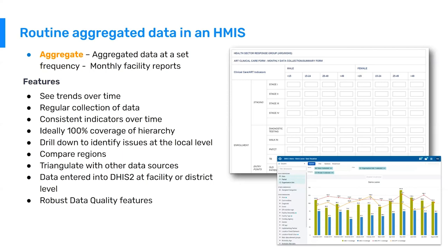Some features of aggregate reporting in DHIS-2 are that we can easily see trends over time, as shown in the example at the bottom of the screen. We also have regular collection of data at a set frequency, which helps with reporting rates, monitoring when reports haven't come in, and making sure reports are sent in on time. We also have consistent indicators over time, enabling year-over-year indicator analysis with reliable data from aggregate systems over many years, and long-term trend analysis and even projection or forecasting analysis.